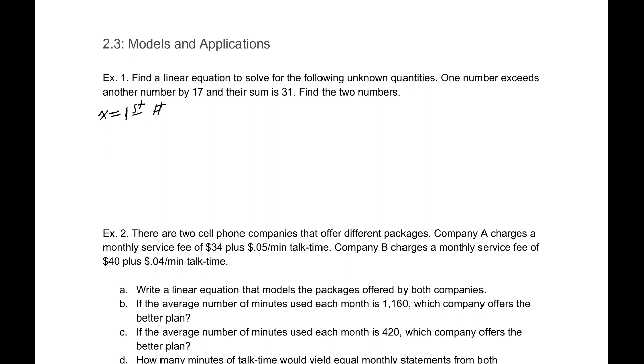I'm going to call y my second number. So one of these numbers is 17 bigger than the other. It exceeds it. So I'm going to go with x equals y plus 17. That takes care of our first fact. And their sum is 31, which means if we take x plus y, we should get 31.